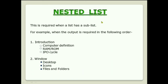The nested list is required when a list has a sublist. For example, if the output has items 1 and 2 as an ordered list — like Introduction and Window — and inside each you use bullets such as computer definition, RAM, ROM for item 1, and desktop icons, folders for item 2, that inner bulleted part is the unordered list nested inside the ordered list.